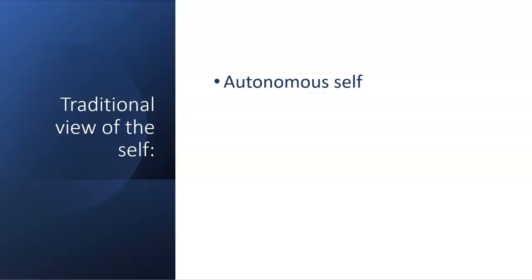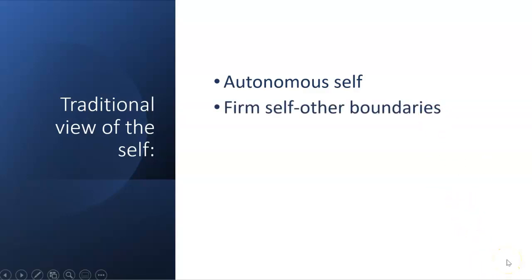The self is the house of consciousness and awareness — it views and interprets the external world. So the idea of autonomy is critical. The second element is that it is well-bounded. In traditional Western psychology models, a healthy ego is a non-porous thing. You have your identity, I have my identity, and the two do not intersect one another.